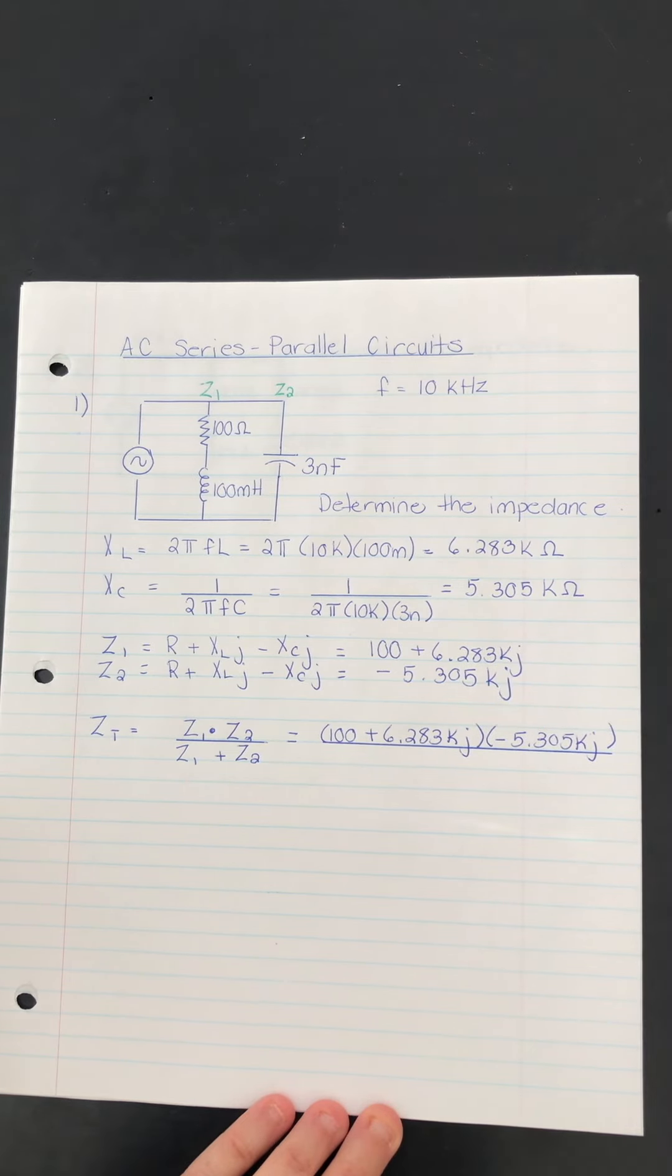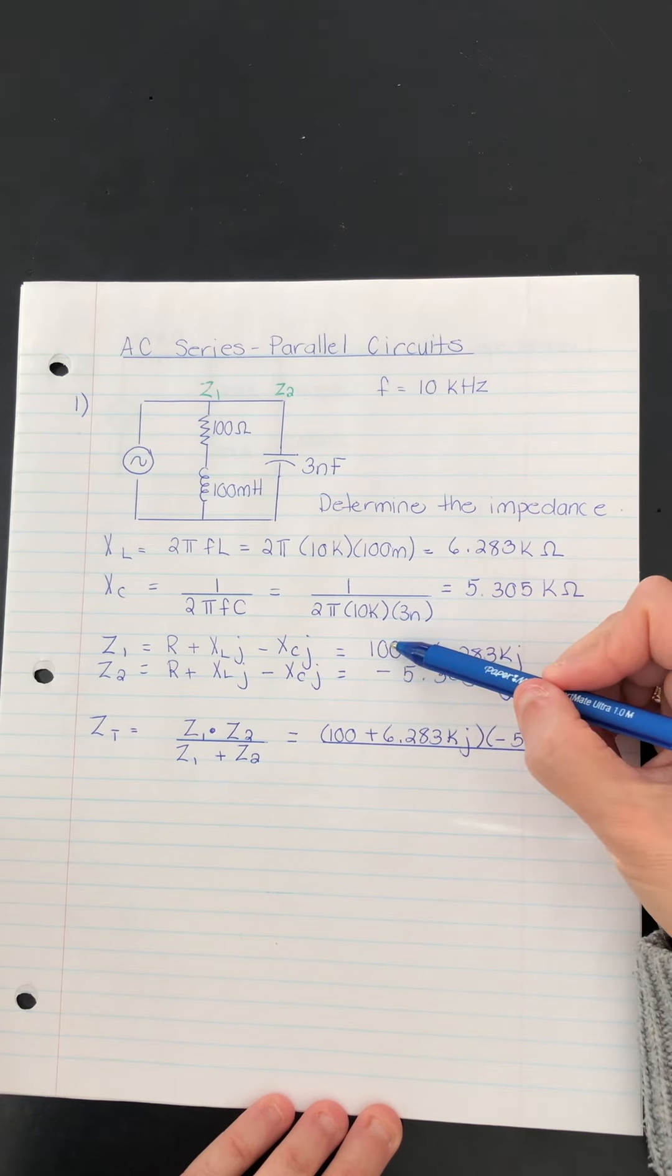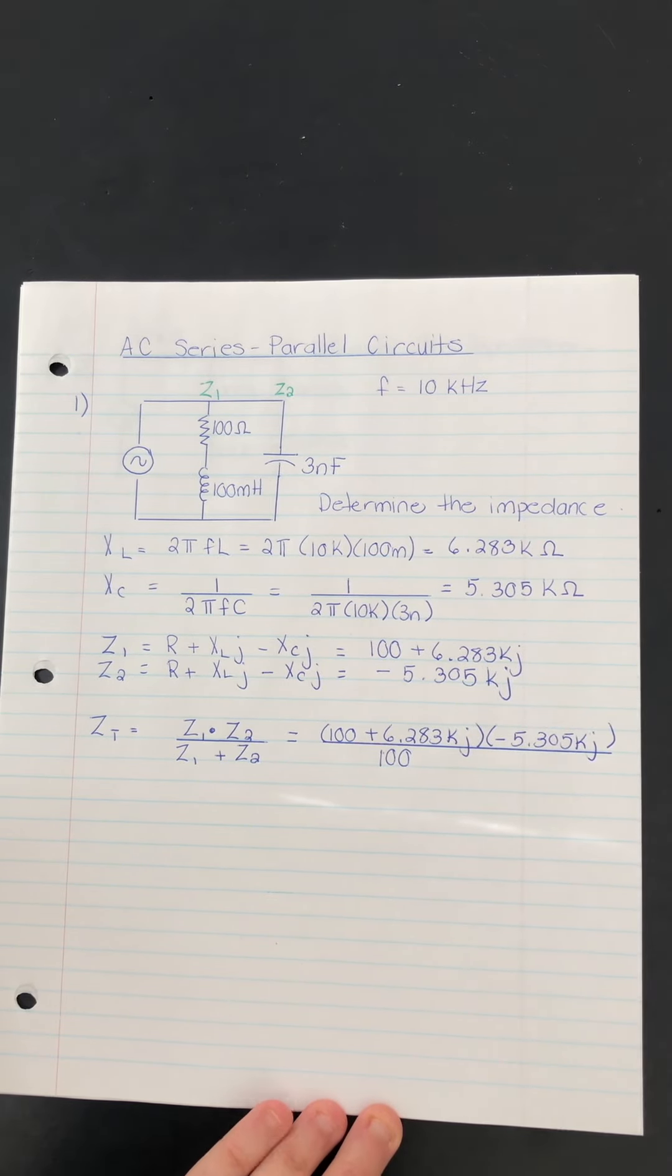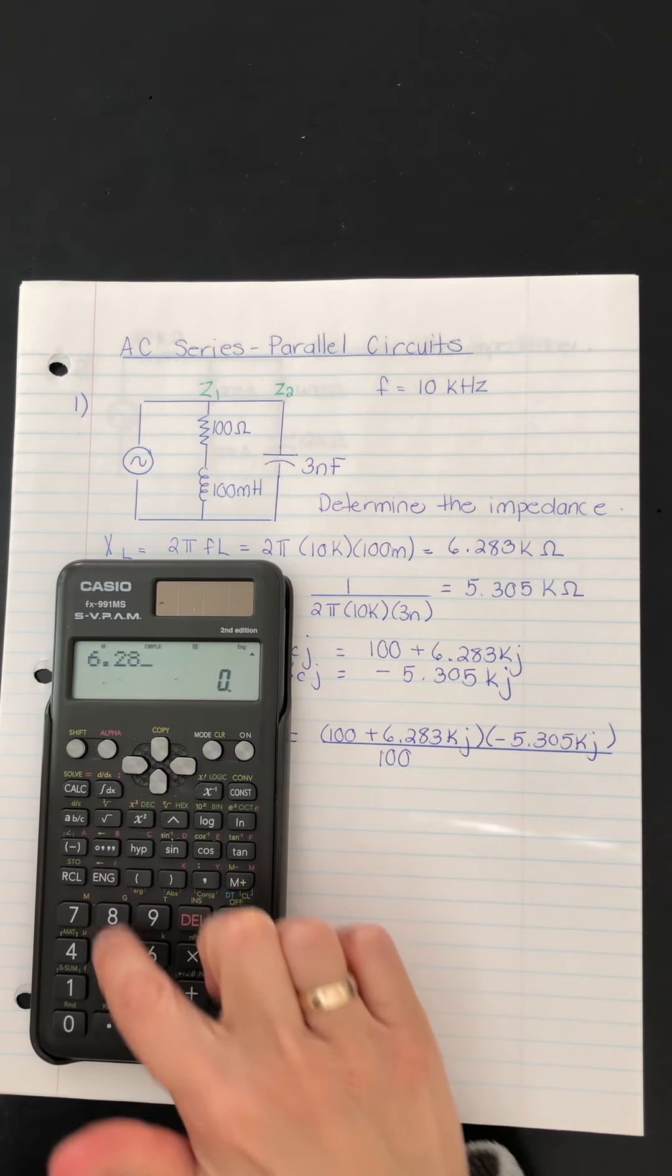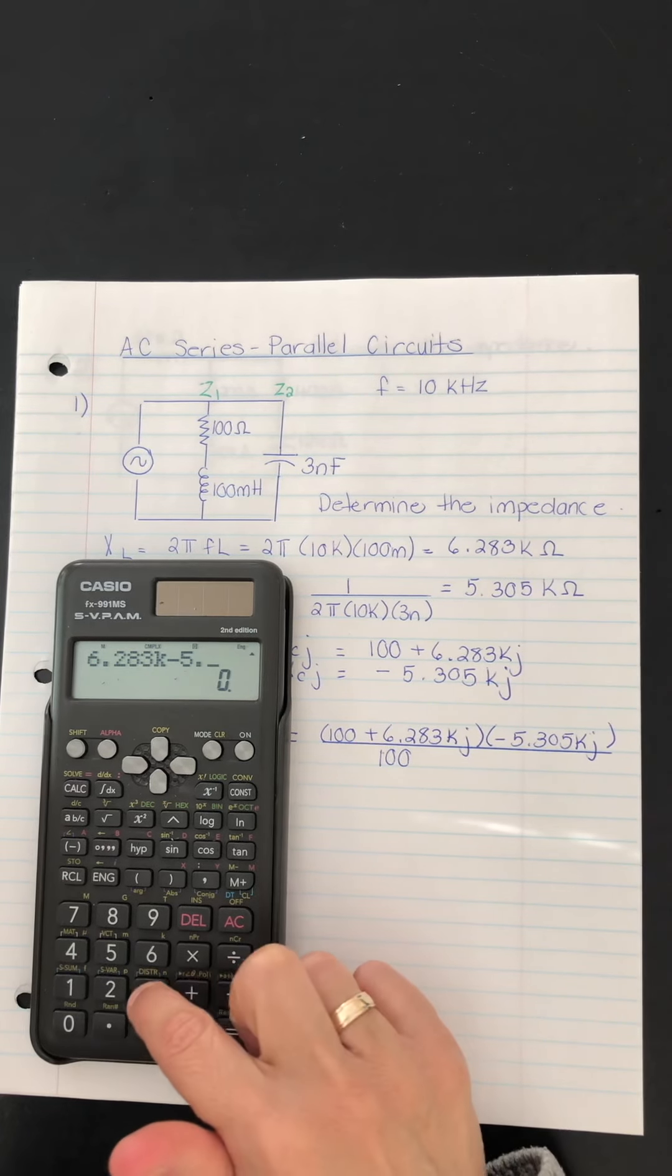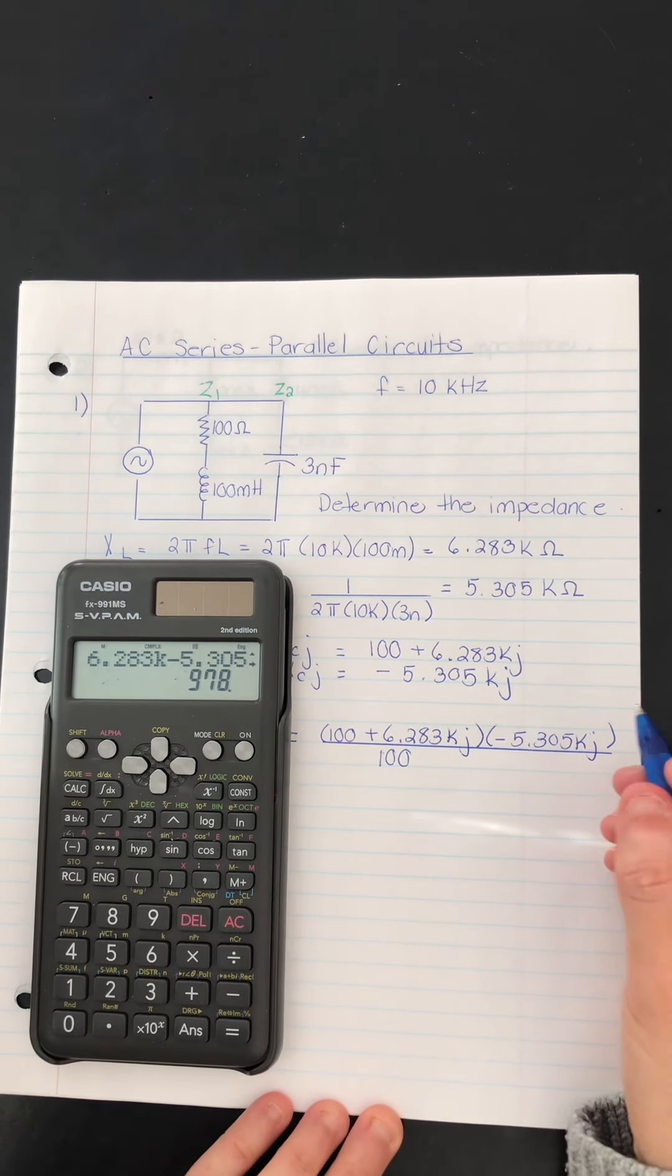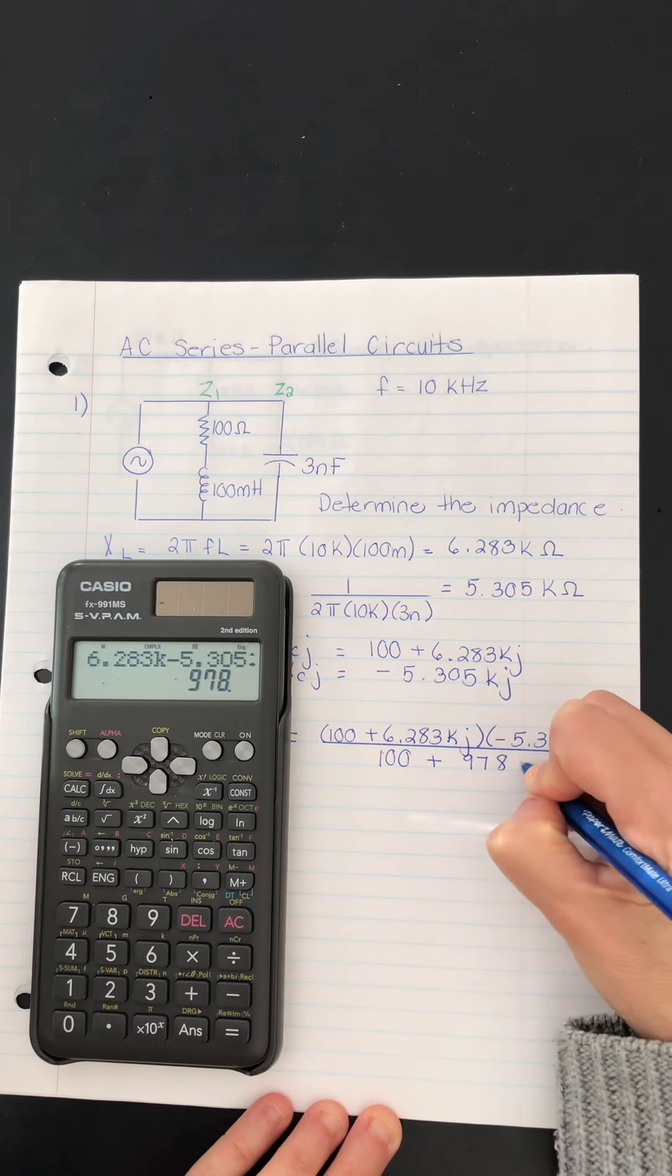Here there's a zero. So you do 100 added to zero will stay zero. And now we have to add the two imaginary parts. So we take this 6.283 kilo and actually we subtract 5.305 kilo from it. And we get the number 978 and it's positive. So this is plus 978J.